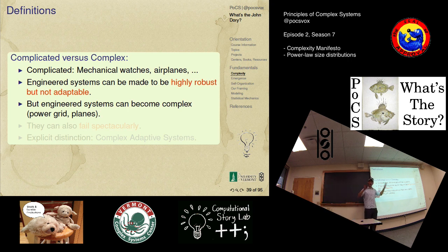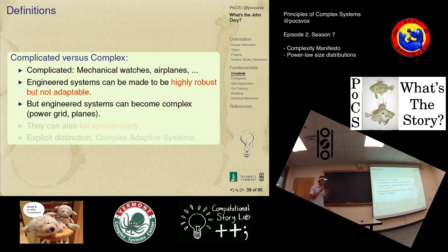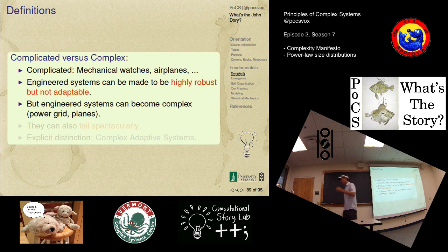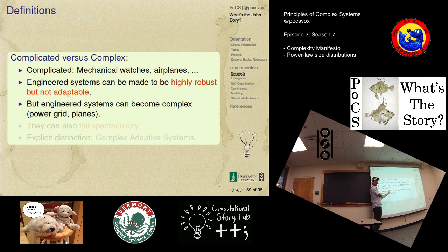We've certainly created engineered systems that are now complex in the sense I want to use. The power grid is a great example — power grids were built locally, they work well, they were engineered things. But they've been connected up over time for business reasons. You get beyond the original design, and as we've seen — Paul Hines here in the complex systems group specializes in this — you get these disasters that are absolutely unforeseen and in some cases very hard to understand as to their origin. Lots of spectacular failures.